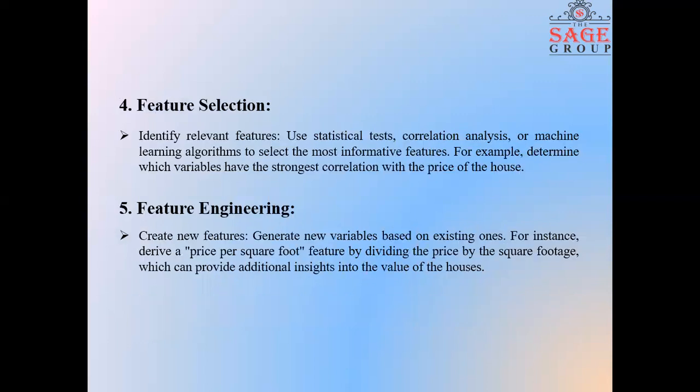Next step is feature selection. It identifies the relevant features. You can use statistical tests, correlation analysis or machine learning algorithms to select the most informative features. For example, determine which variables have the strongest correlation with the price of the house.